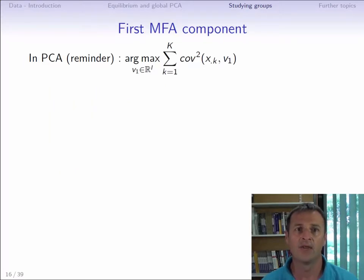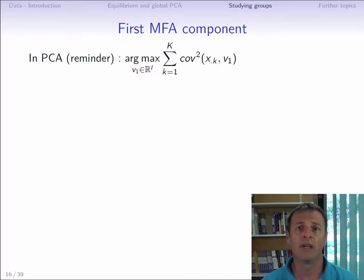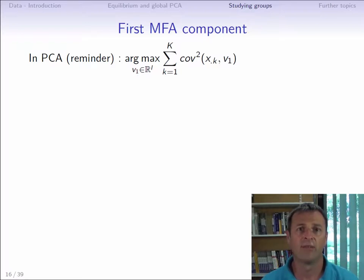First, let's go back to the construction of the principal components. In PCA, the first principal component is the variable with norm 1, which we call V1, belonging to the space Ri, which is most related to all of the variables — most linked in terms of squared covariance. If the PCA is normalized, the first component corresponds to the most related variable in terms of the squared correlation coefficient.